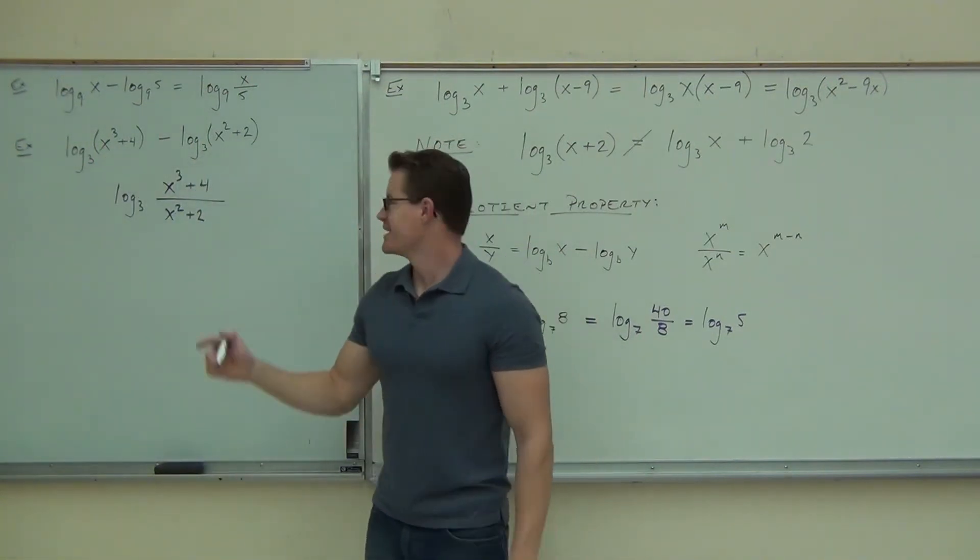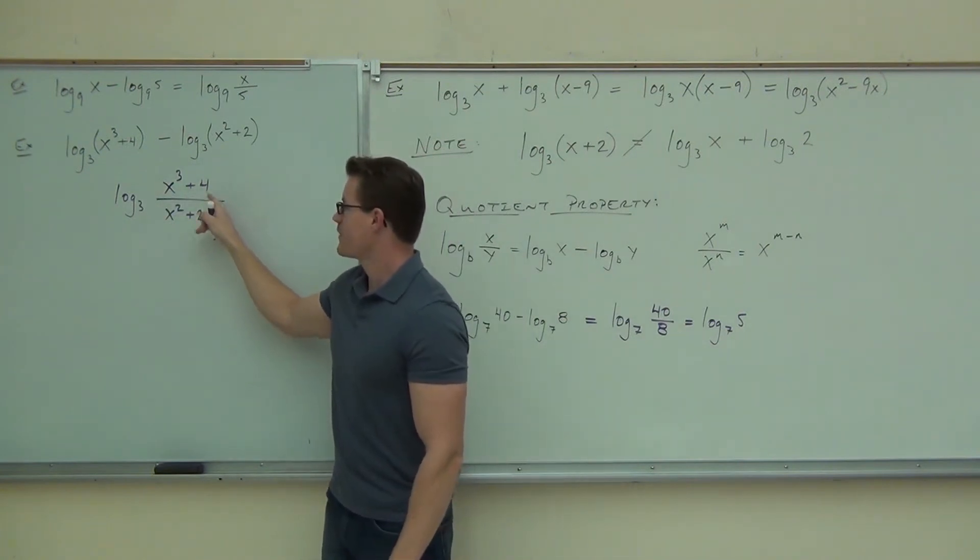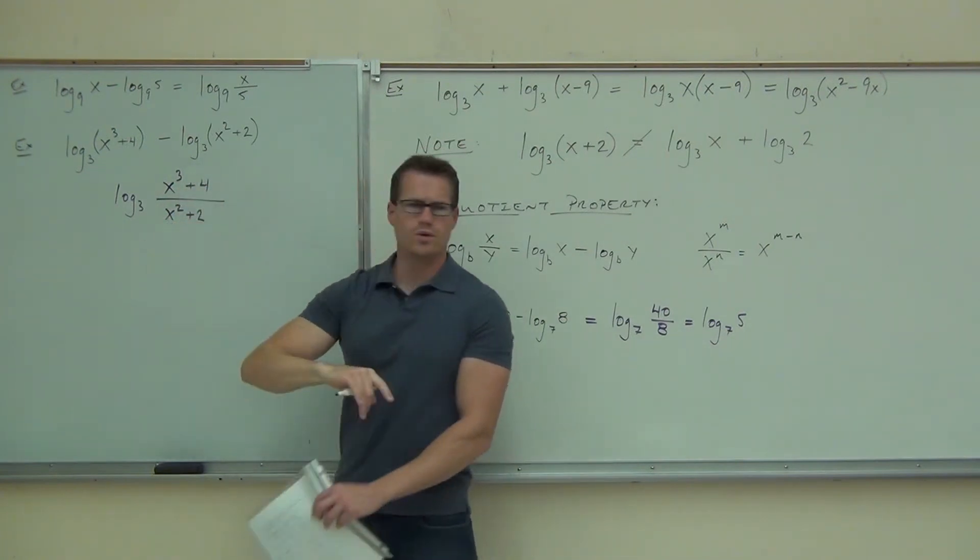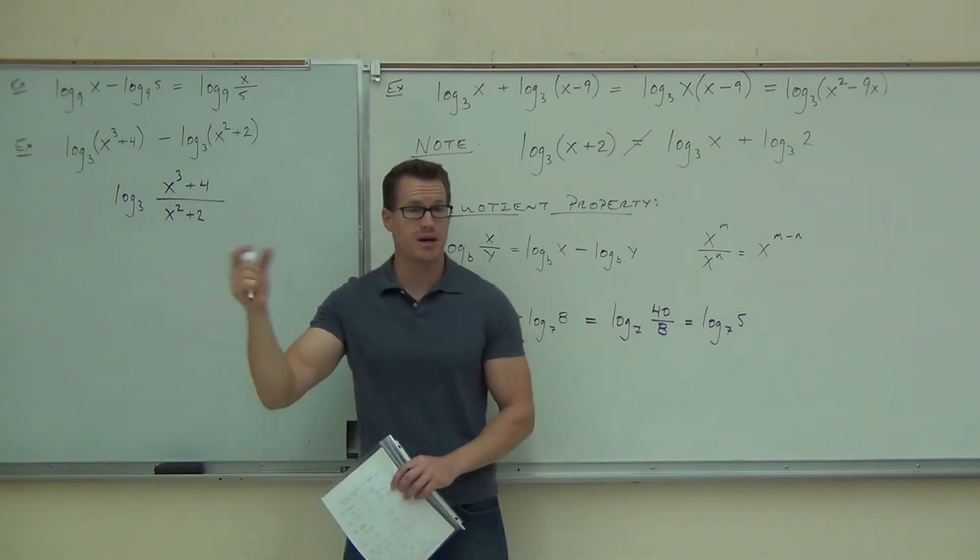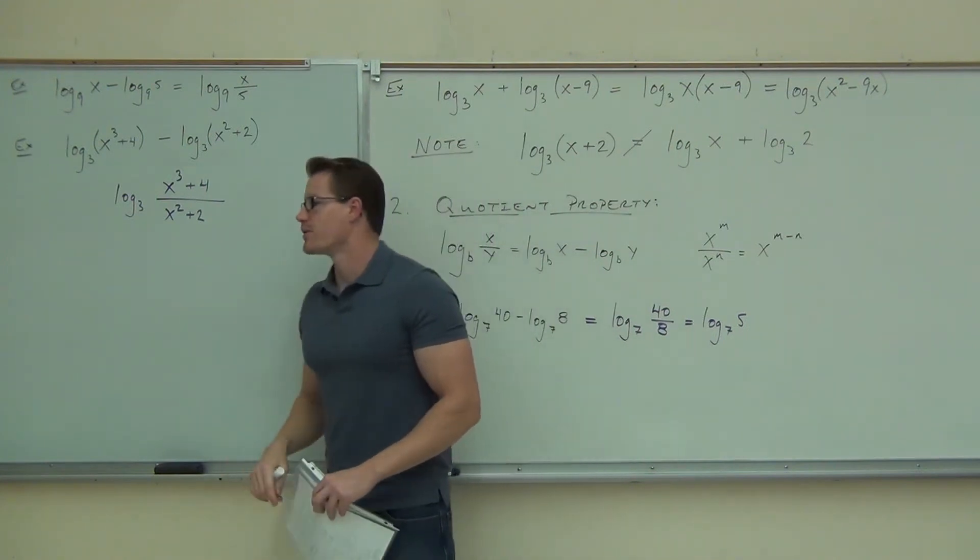That's it. You try to simplify it. You can't factor any of this stuff. Can you cross out the x cubed and x squared? No. Don't do that. You can't do that. It's connected by addition. So you're done. That's as far as you can go on that example.